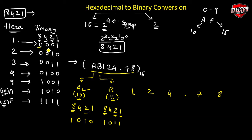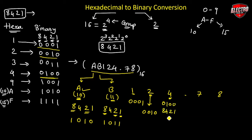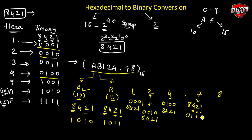To convert digit 1 into binary we get 0001. To convert digit 2, we get 0010. To convert digit 4 using the 8-4-2-1 code, we get 0100. To convert digit 7, we use 4 plus 2 plus 1, which equals 7, giving binary 0111.